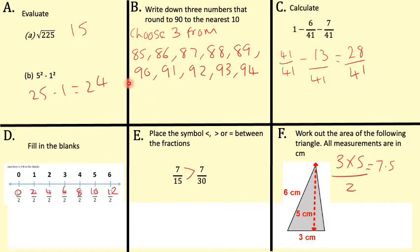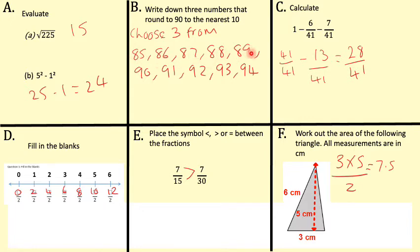Let's have a quick look through some of them. Question B: write down three numbers that round to 90 to the nearest 10. If rounding to the nearest 10, we look at 85 — we draw our line after the tens column and analyse the units column. If the number in the tens column is 8, the units column would have to be 5, 6, 7, 8, or 9 to round us up to 90.